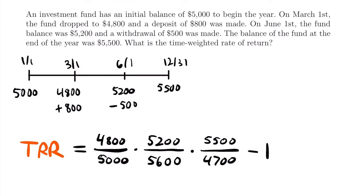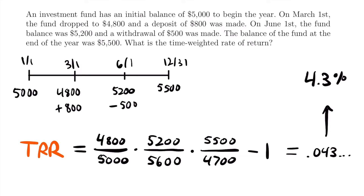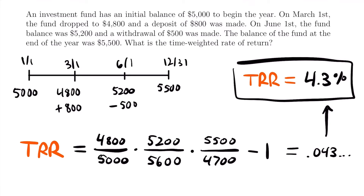As long as you set up your timeline like this, setting up the equation should not be too difficult. If you plug this into your calculator — multiply these fractions together and subtract one — you will find that the time-weighted rate of return is equal to approximately 0.043, which rounds to 4.3%. That is the time-weighted rate of return and the solution to this example.